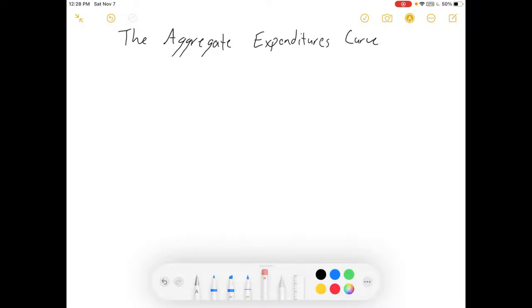Hey everybody, welcome to a video on the aggregate expenditures curve. We're going to start building our Keynesian cross model by building the AE line.